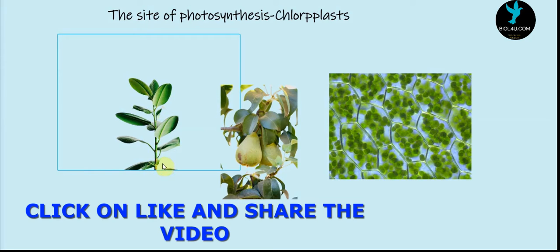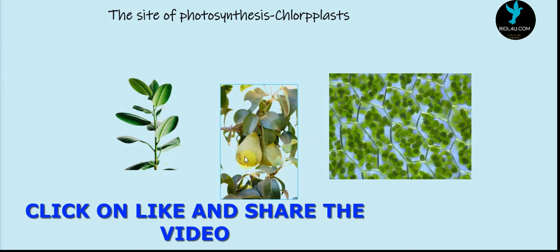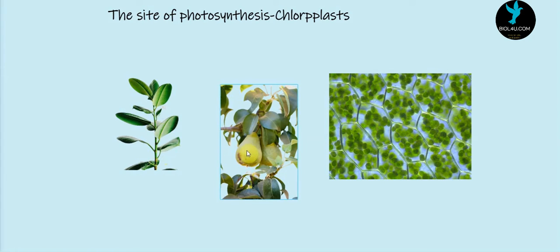In this plant, photosynthesis takes place on the green leaves. It also takes place on the green stem — that means the young stem, the green part of the plant. It also takes place in the fruit when it is in the unripe condition, that is in the green fruit. So photosynthesis takes place on young stems, fruits, and other parts of the plant having green color.